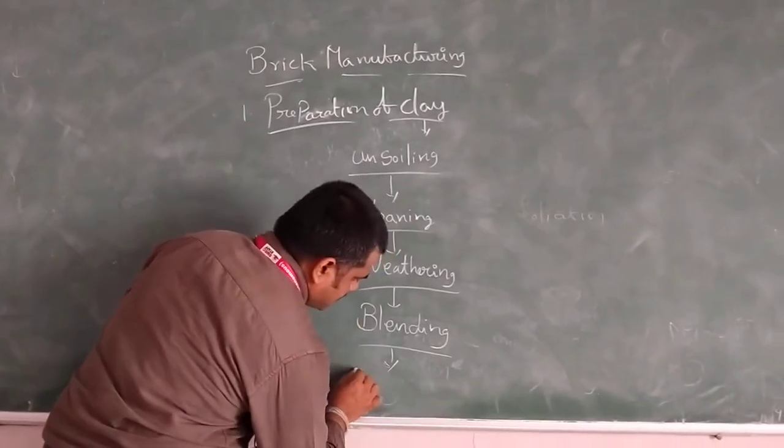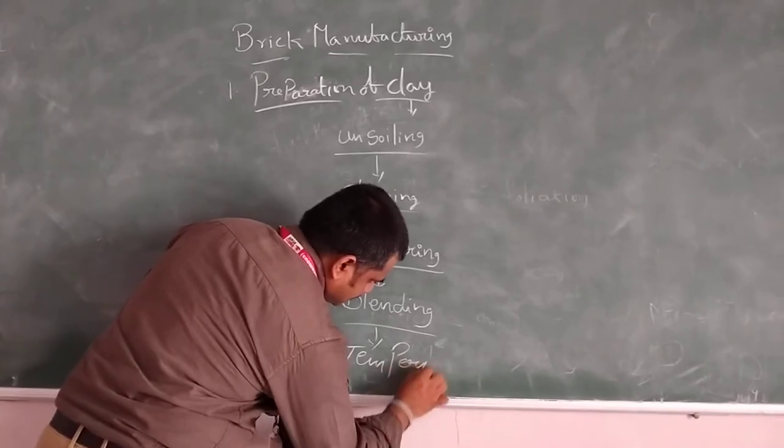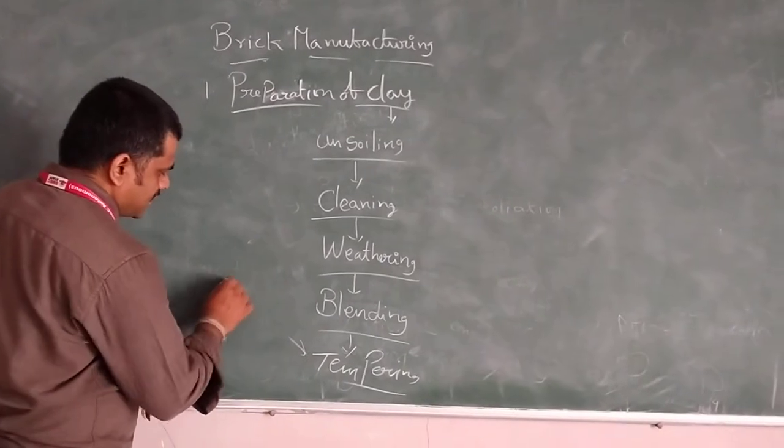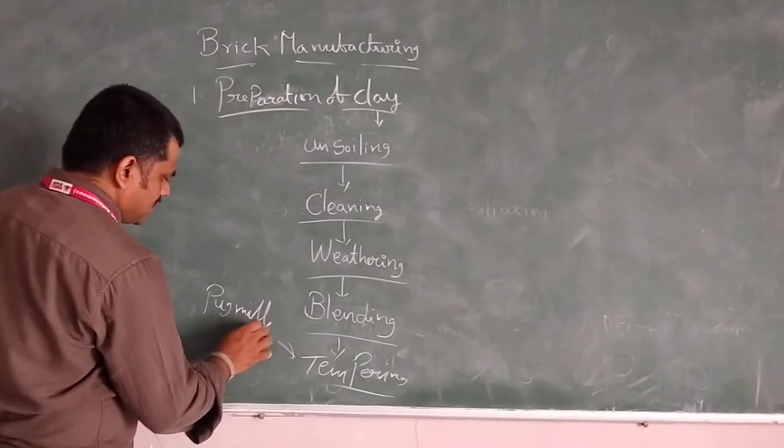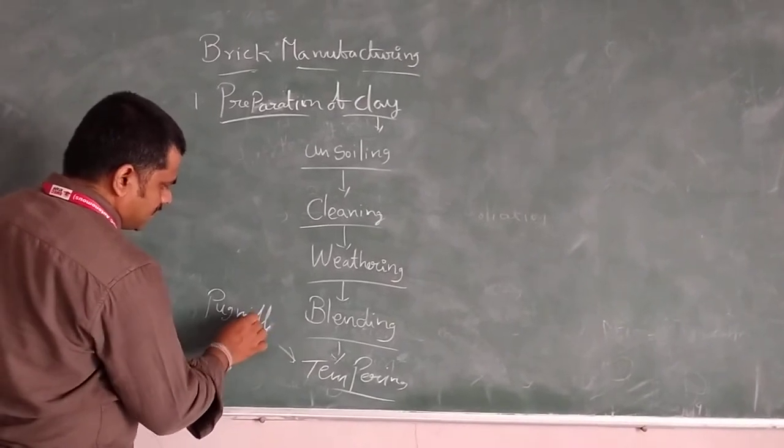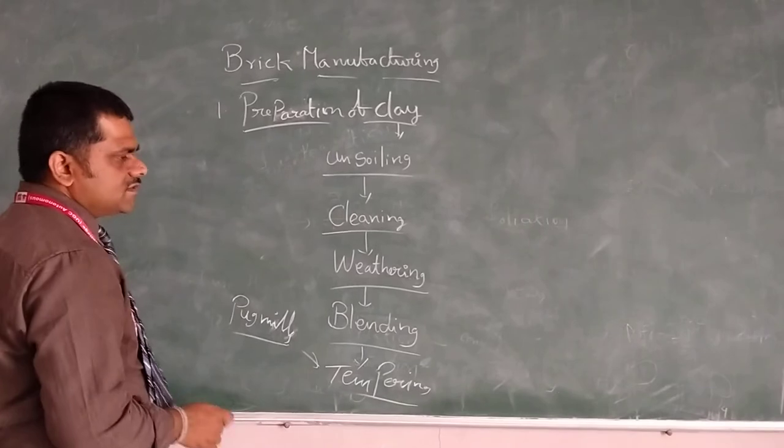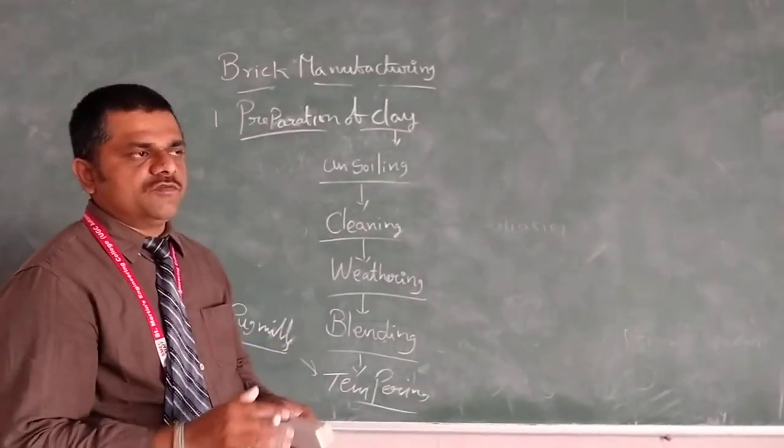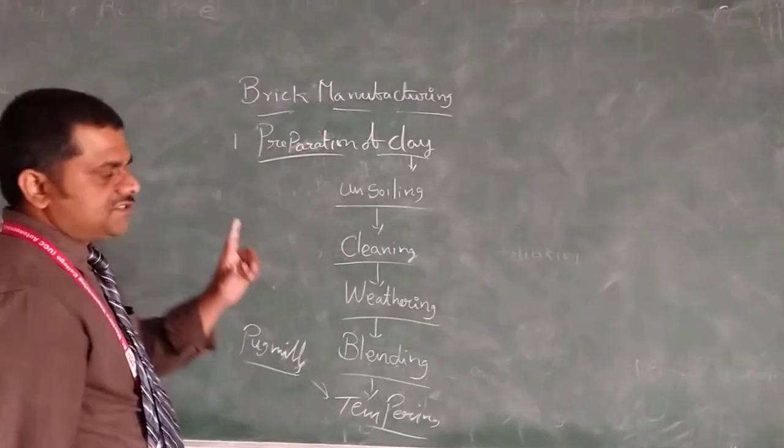And next one is tamper. In this tampering, generally man-made or big equipment is used. Pugging machines are used. Pugging machines nowadays have higher capacity. To make a very thin layer for the tamper. This is the first stage, preparation of clay.